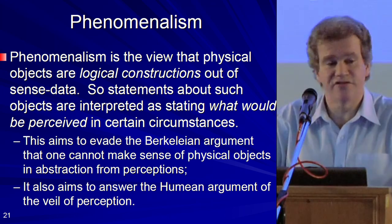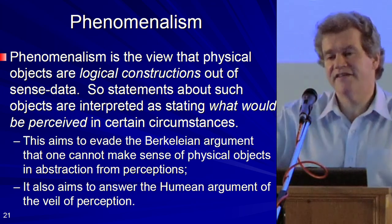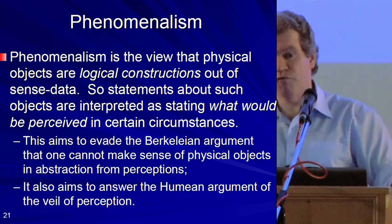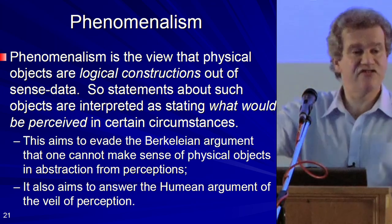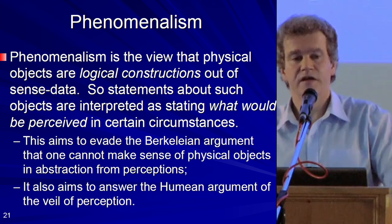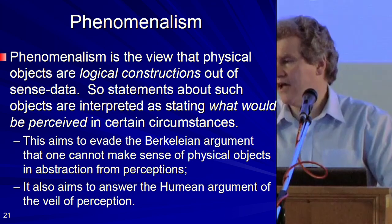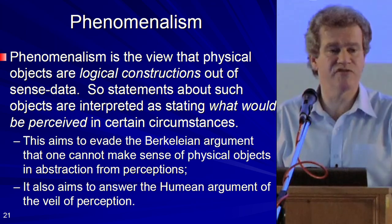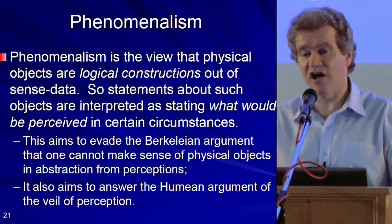Phenomenalism tries to get around the Berkeleian argument by actually analysing physical objects as perceptions, and also tries to get around the veil of perception problem. But again, the problem of horizontal scepticism can be raised just as effectively. Phenomenalism tries to avoid vertical scepticism by analysing physical objects in terms of what we know — our own perceptions. But we can still raise the problem of induction: you've still got the problem of justifying predictions about what you would perceive in certain circumstances.